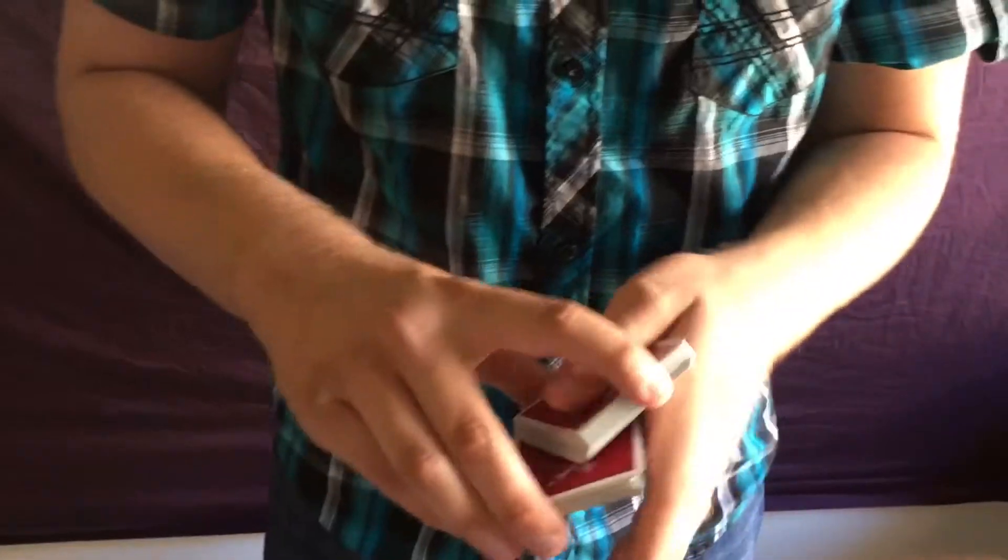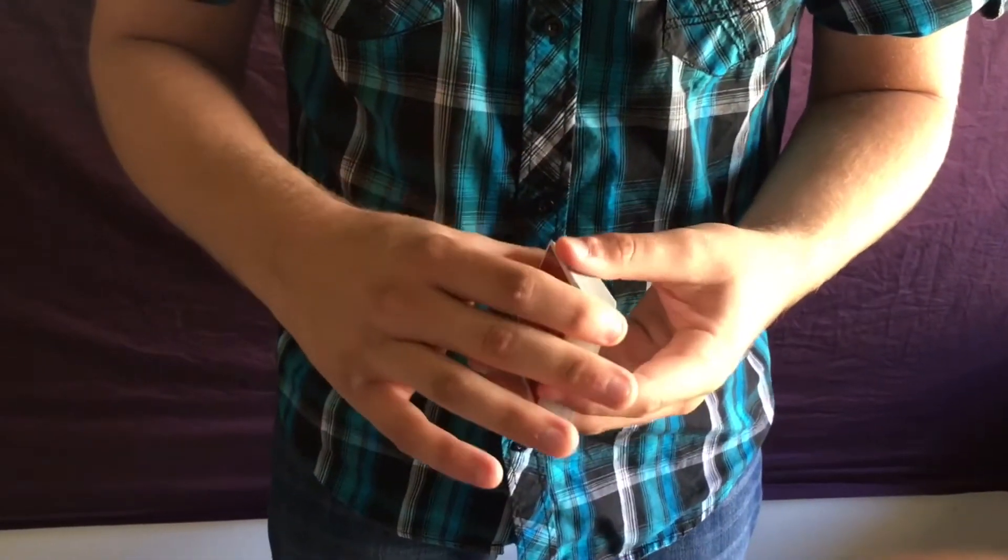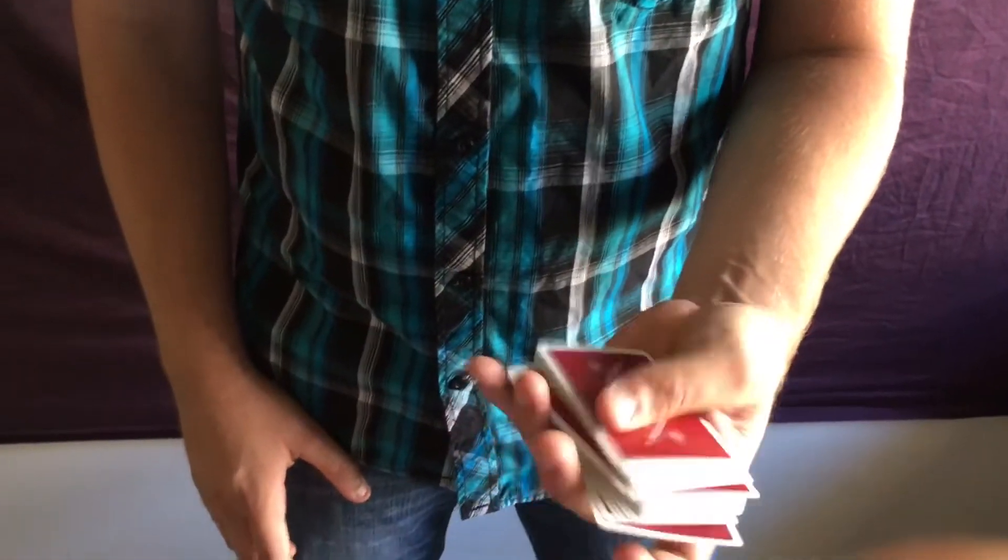I taught you the swing cut and the modified swing cut. Now I'm going to teach you the Charlier cut. This is what it looks like—it's a one-handed cut, pretty cool.